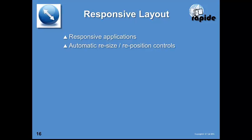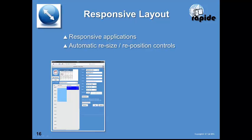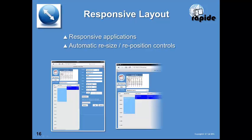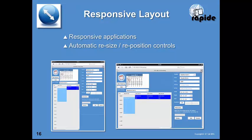Responsive layout means that if you have an application on a mobile device and change the orientation, the controls are repositioned or resized to have a good layout on whatever orientation you choose — including different device sizes, whether a phone with a small screen, a tablet, or a browser on a very large screen. With RAPID, you specify layout rules in the RAPID Designer and the layout is automatically handled by the RAPID runtime so the application is responsive.